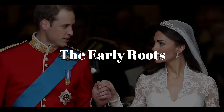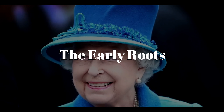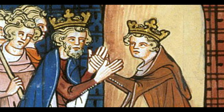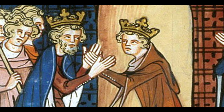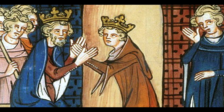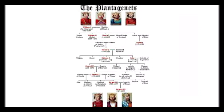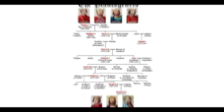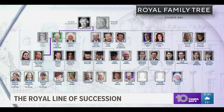The Early Roots. Our journey begins in the annals of history, where the British monarchy has its roots. From the legendary King Arthur to the medieval Plantagenets, the early chapters of this family tree are filled with tales of conquests, alliances, and the establishment of a royal lineage that would endure for generations.